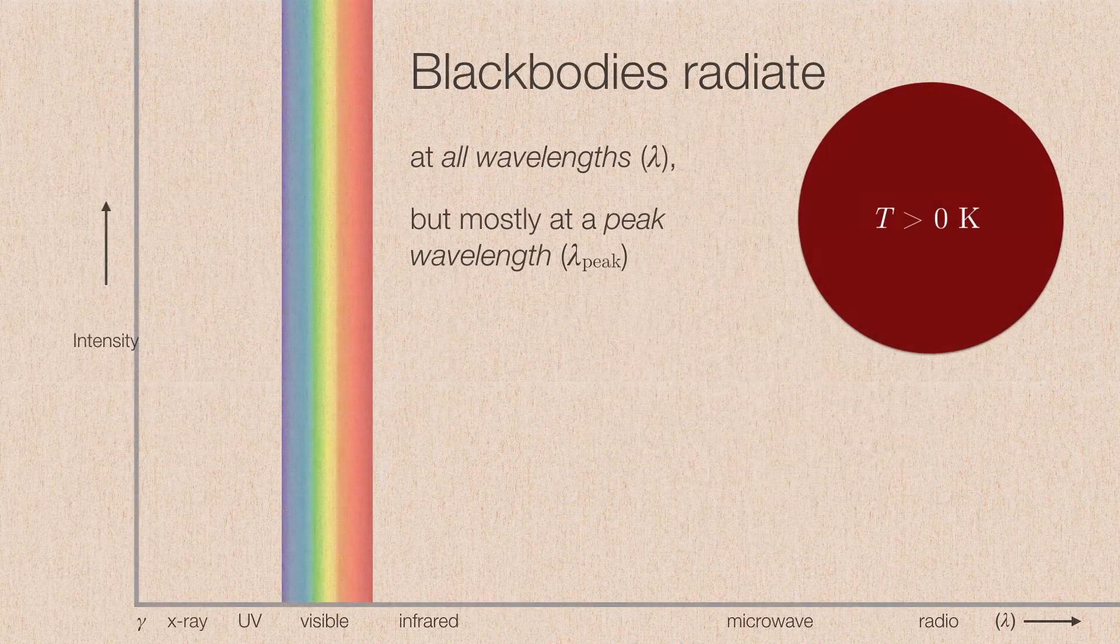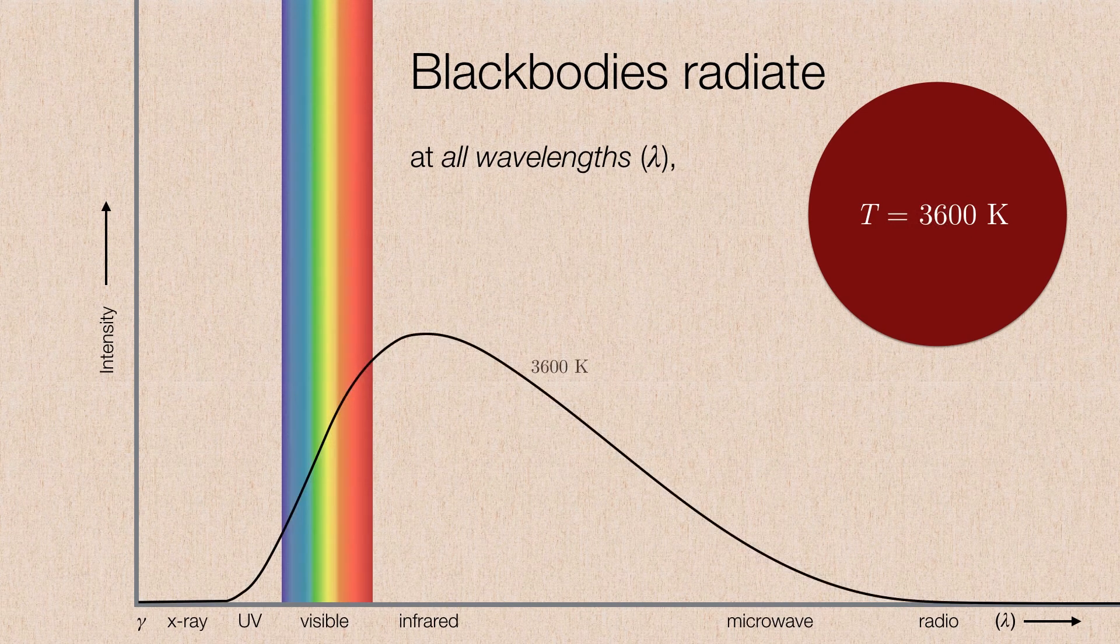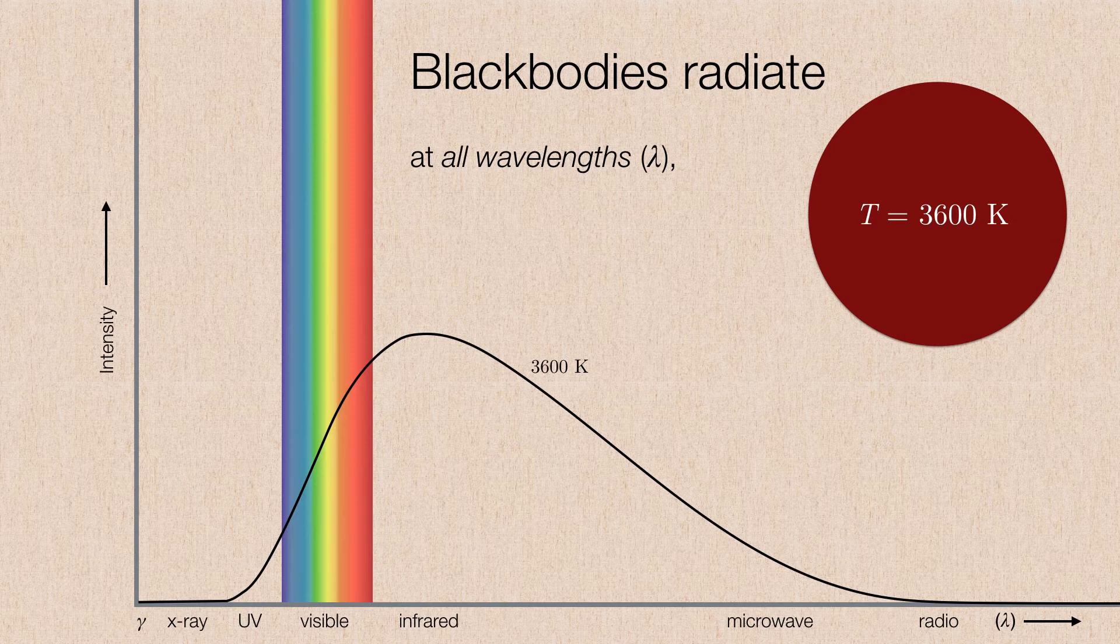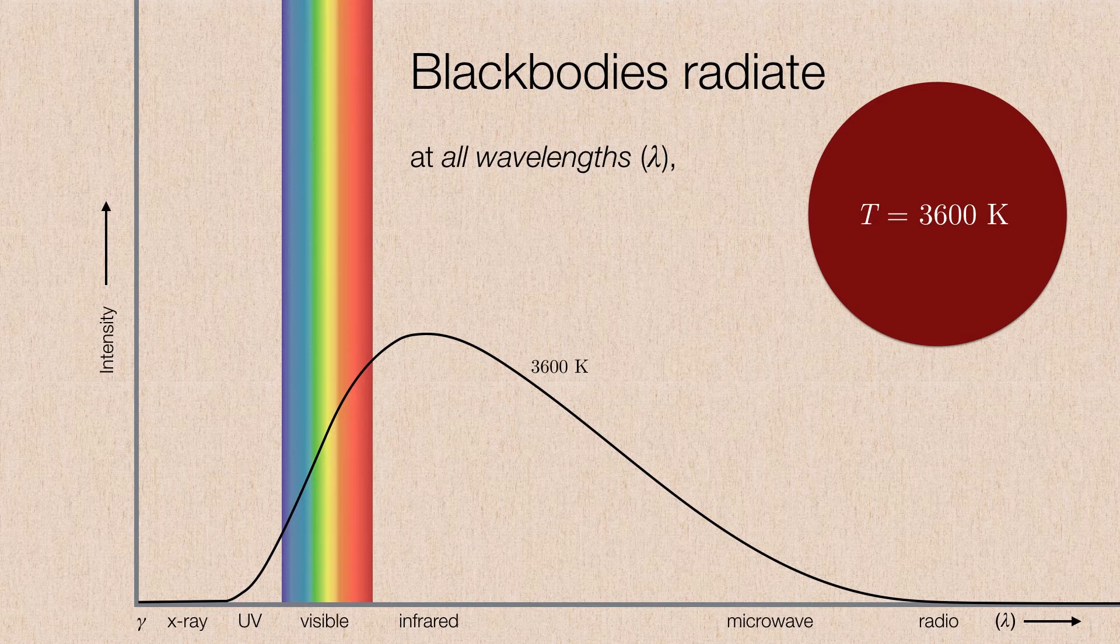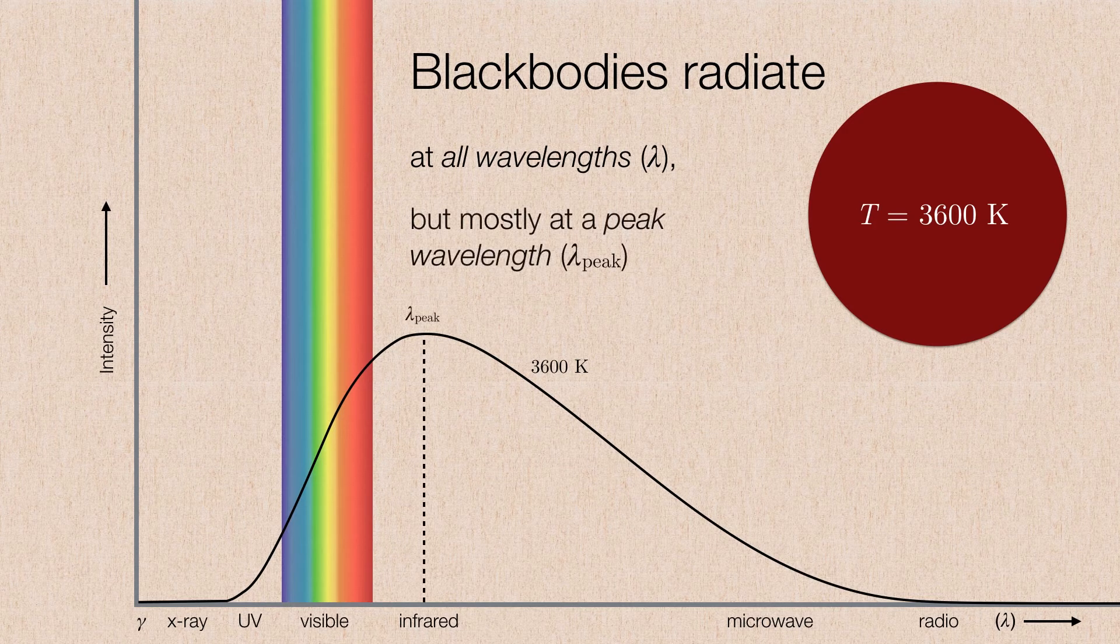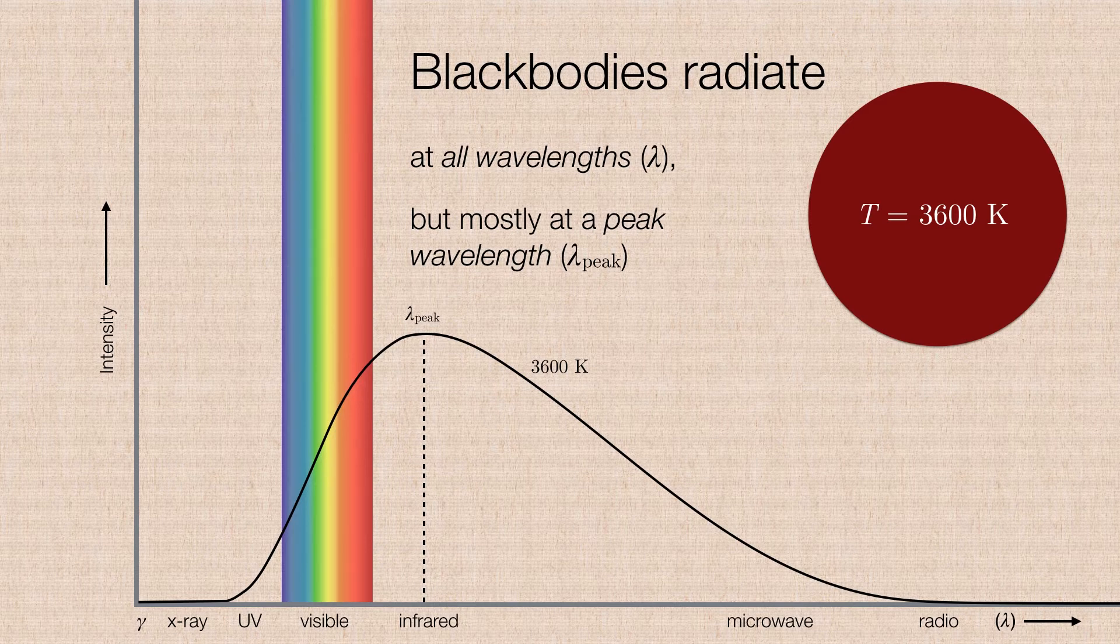So let's have a play with these black bodies. Let's imagine now we're going to heat our black body up. We're going to give it a temperature. In this case, it's about 3,600 Kelvin. The atoms inside begin to move a lot quicker. The atoms collide or scatter, and the electrons release energy. Since they radiate at all wavelengths, they release energy at all wavelengths. But they radiate mostly at a peak wavelength. In this case, the peak wavelength is somewhere in the infrared.